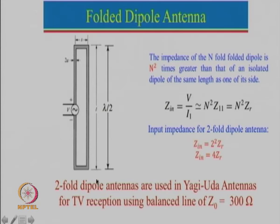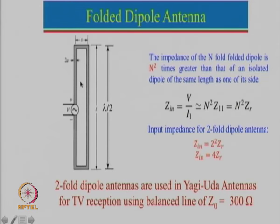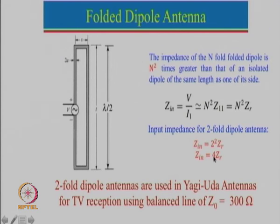One can also control the impedance by adjusting the relative diameters of the two conductors. If the second conductor diameter is smaller than the first, the impedance will be slightly more than 4 times; if it is larger, the impedance will be slightly less than 4 times. So one can control the input impedance by designing these dimensions properly.